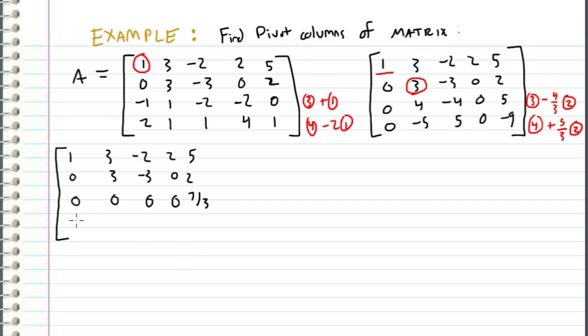Then we move on to the fourth row, and we have a zero right here. We have negative five plus five thirds times three, which gives us zero right here. And then we also get a zero right here and a zero right here. So we have a negative nine plus five thirds times two, which comes out to be negative seventeen thirds.